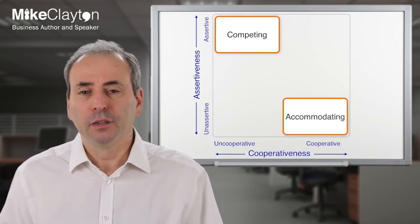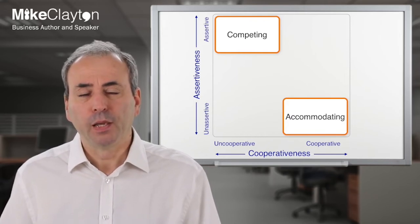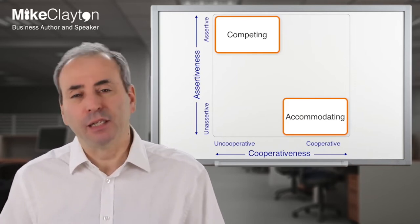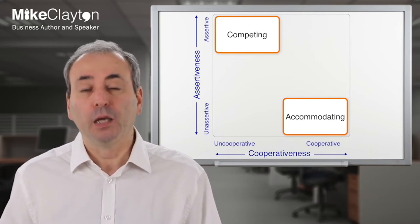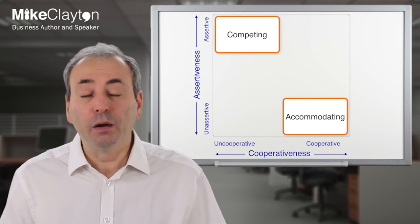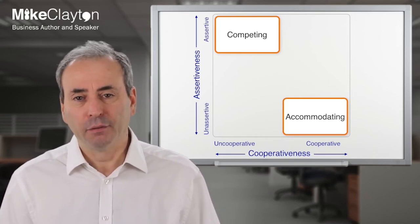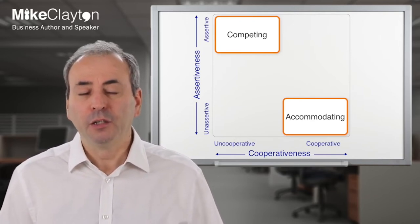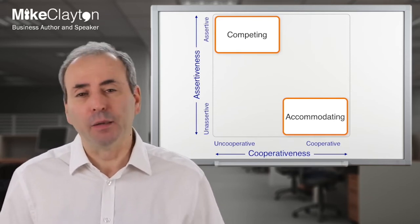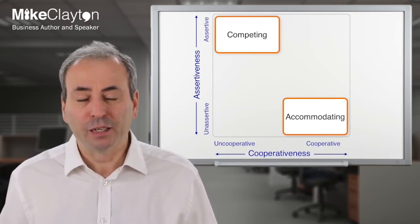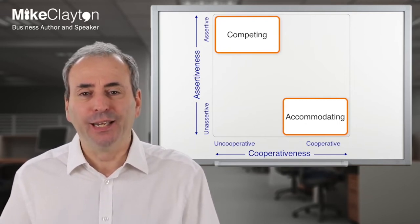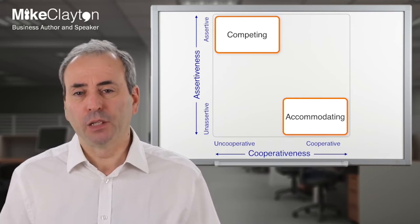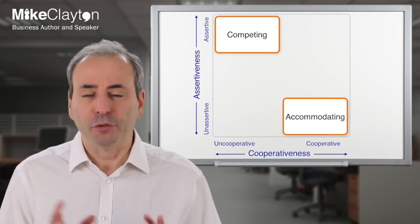The competing mode is appropriate if you have to get the result and are prepared to sacrifice the relationship. At the other extreme, the relationship may be worth far more to you than the individual outcome — so why fight for what you'd prefer if it risks damaging a relationship that matters to you more? A good example is if you're arguing with your partner about what movie to see at the weekend. What matters is that you have a pleasant evening out — a bit of harmony goes a long way, and accommodating their needs will strengthen the relationship. This mode is called accommodating.